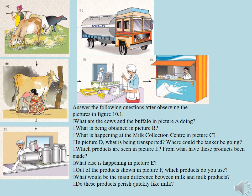Answer the following questions after observing the pictures in figure 10.1. What are the cows and the buffalo in picture A doing? What is being obtained in picture B? What is happening at the milk collection center in picture C? Which products are seen in picture E, and from what have these products been made?